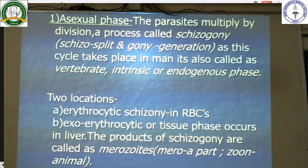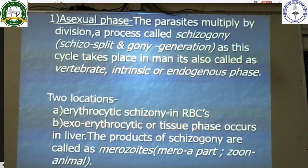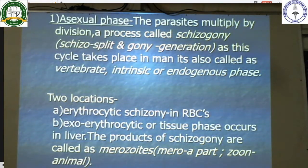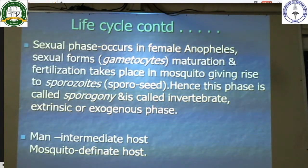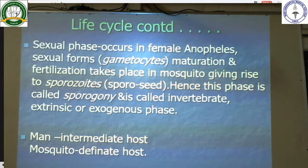In humans, it occurs in two locations. It can occur within the RBCs — called erythrocytic schizogony — or it can occur in the liver, called exoerythrocytic schizogony. The products of schizogony are called merozoites. The sexual phase occurs in the female Anopheles mosquito. These sexual forms are called gametocytes, which mature and fertilize in the mosquito, giving rise to sporozoites.